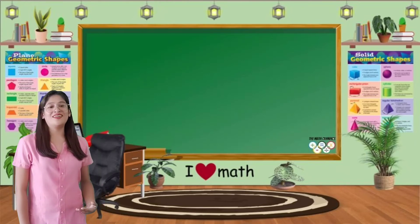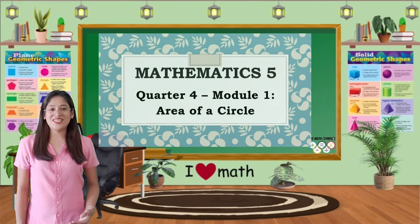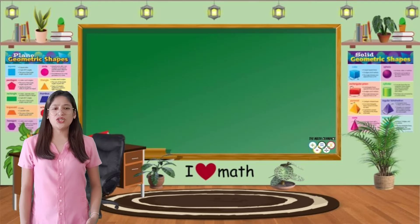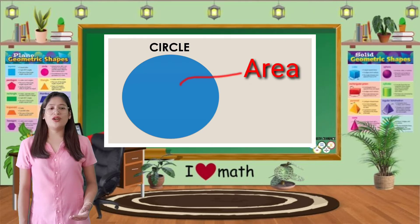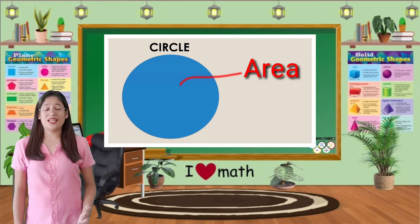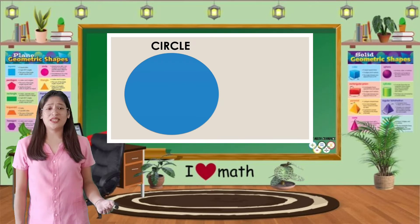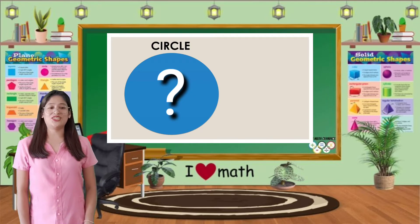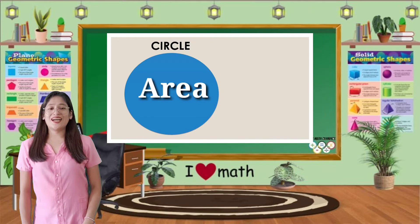Let's move on to our topic, which is finding the area of a given circle. The area of the circle is the region or space occupied inside of an enclosed circle. In simple words, if we want to know the space covered inside of a circle, we refer to it as the area.